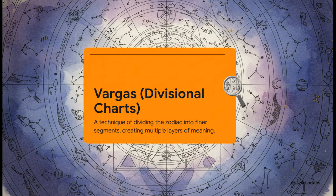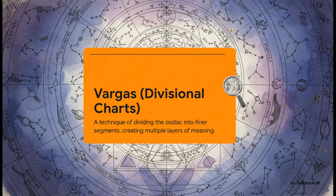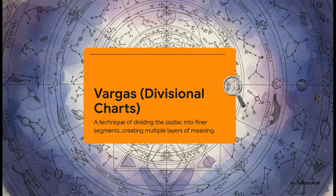Okay, imagine the zodiac is a giant map. The Vargas are like a cosmic zoom lens. They let you zoom into any single point on that map. And when you do, a whole new, more detailed map appears underneath. And you can keep zooming, revealing more and more layers of incredible detail.